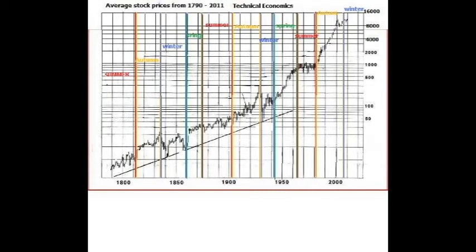The J-Long Wave is a debt-to-accumulation cycle of the fractional reserve capitalistic system. This cycle runs in four seasons, which is modeled off the Long Wave, but upgraded with technical analysis, Elliott Wave Theory, and Accumulation Theory.